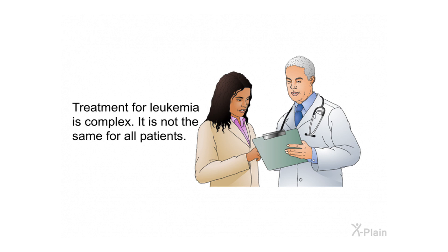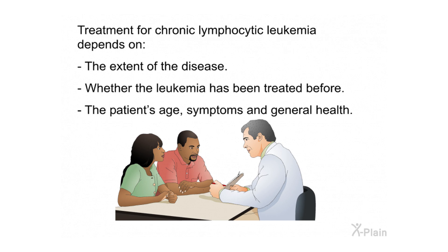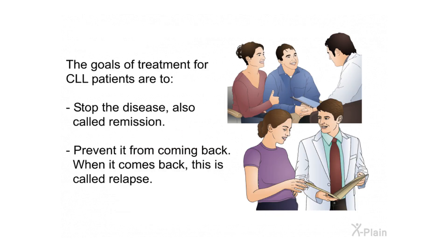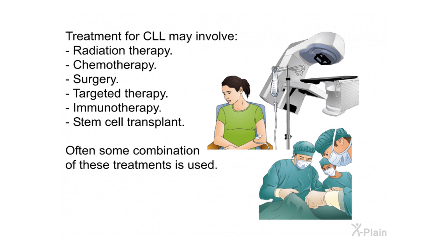Treatment for leukemia is complex and is not the same for all patients. Treatment for CLL depends on the extent of the disease, whether the leukemia has been treated before, and the patient's age, symptoms, and general health. The goals of treatment are to stop the disease, also called remission, and prevent it from coming back — when it does come back, this is called relapse. Treatment for CLL may involve radiation therapy, chemotherapy, surgery, targeted therapy, immunotherapy, or stem cell transplant; often some combination of these treatments is used.